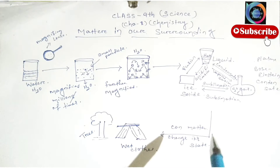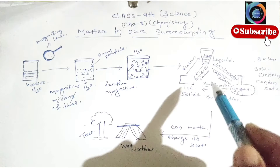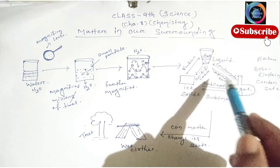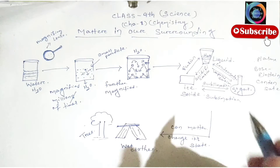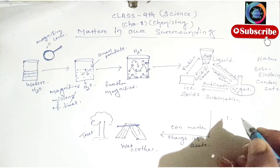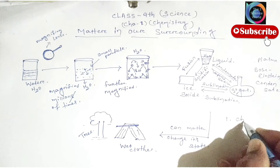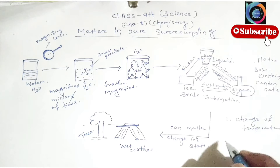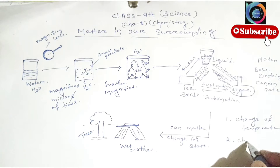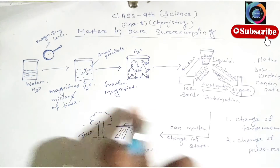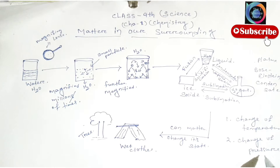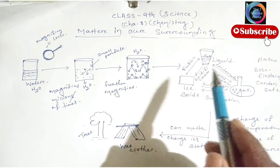Generally, these three states can interchange with each other. Can matter change its state? Yes, matter can change its state. How? First, by the effect of change of temperature, and second, by the effect of change of pressure. If we change the temperature of matter, it can interchange from one state to another state. Similarly, if we change the pressure, then matter can interchange from one state to another state.